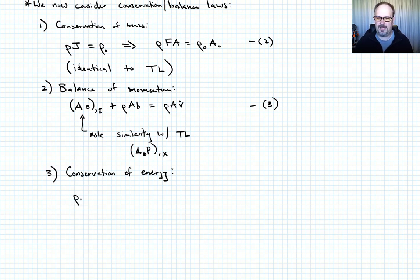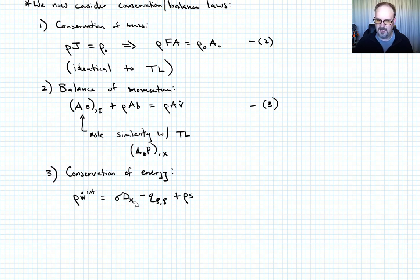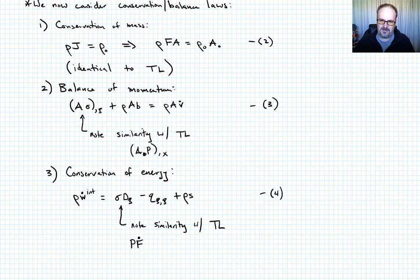Conservation of energy looks similar. The rate of internal work rho w-dot-int equals sigma times d_c — that conjugate pair — plus heat terms: q_xi comma xi, plus rho s (equation four). Compare with the total Lagrangian form where it was P times F-dot: here it's still a rate term (the velocity strain d_c), but multiplied by Cauchy stress sigma instead of nominal stress P.